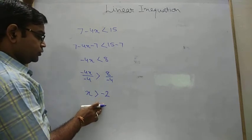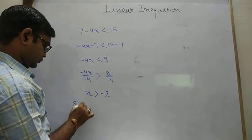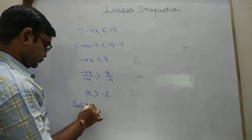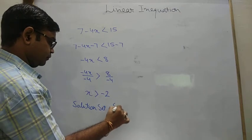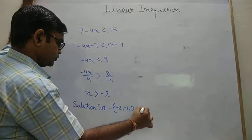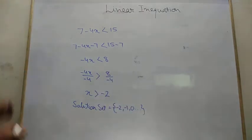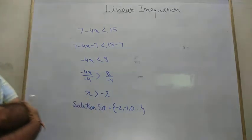x is greater than minus 2. So what is the solution set? The solution set must be contained. It says that minus 2, minus 1, 0, dot dot dot. Means this list continues from minus 2 to positive side. How we draw this one?